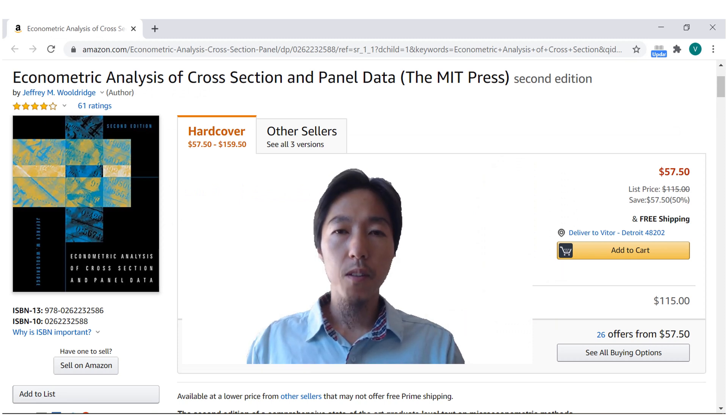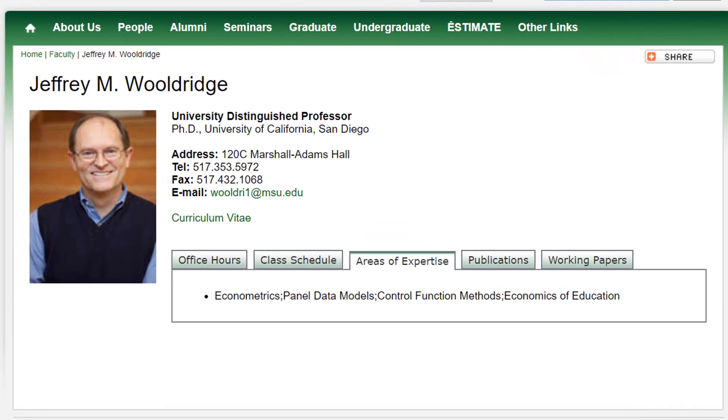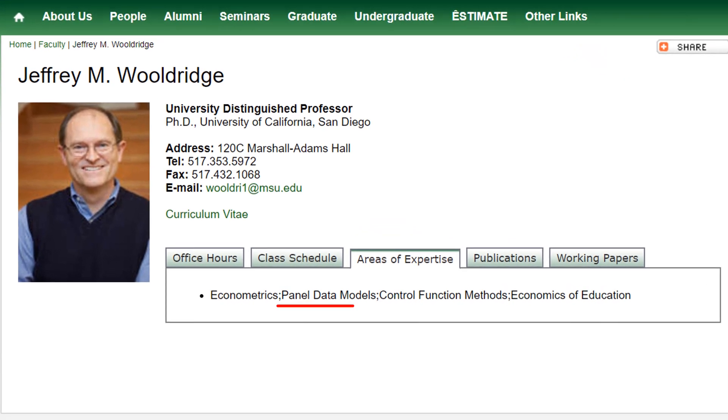Probably this book is the most popular standard book used in Econometrics PhD courses. Many consider Professor Wooldridge one of the top guys in panel data in the world.